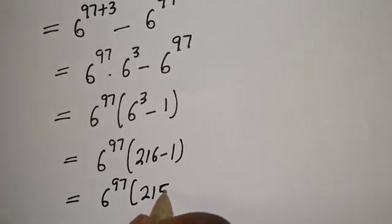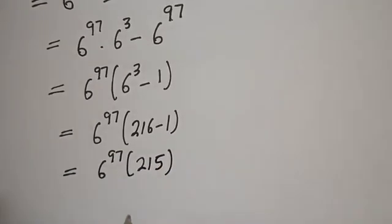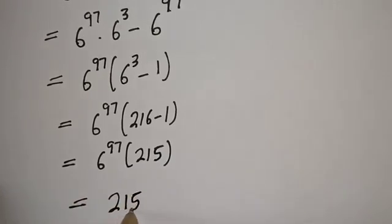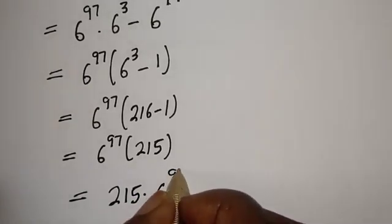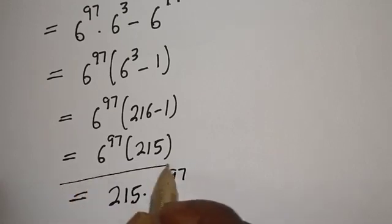Therefore, this can be written as 215 multiplied by 6 raised to power 97. This is the final answer.